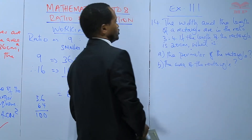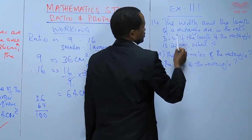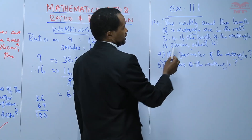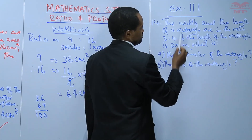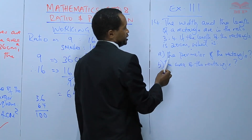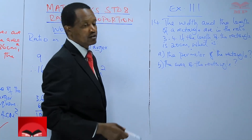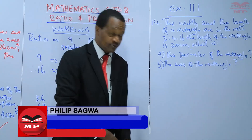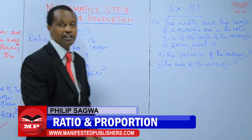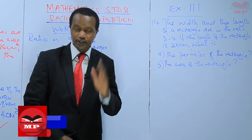The question reads: The width and the length of a rectangle are in the ratio 3 to 4. If the length of the rectangle is 20 centimeters, what is A — the perimeter of the rectangle, and B — the area of the rectangle? Make sure you do the question before attending our next lesson. Bye-bye.